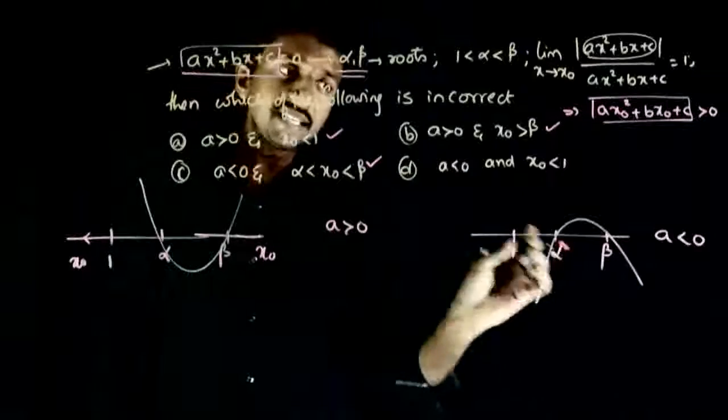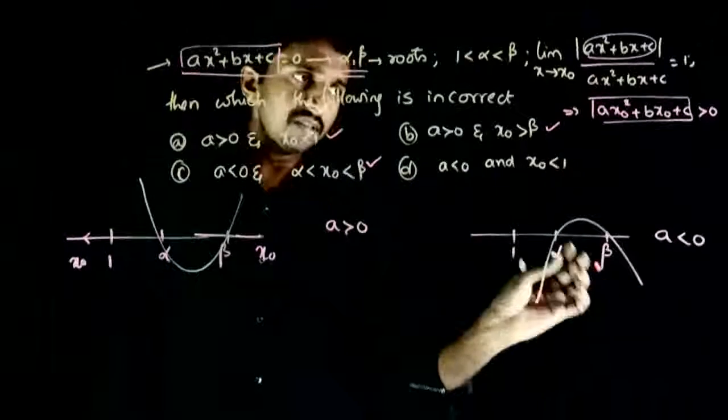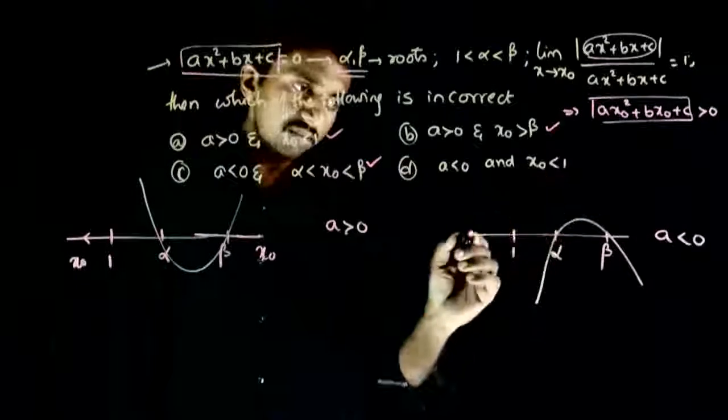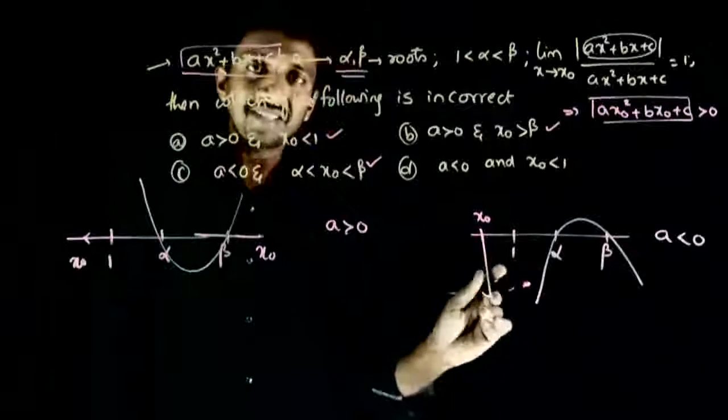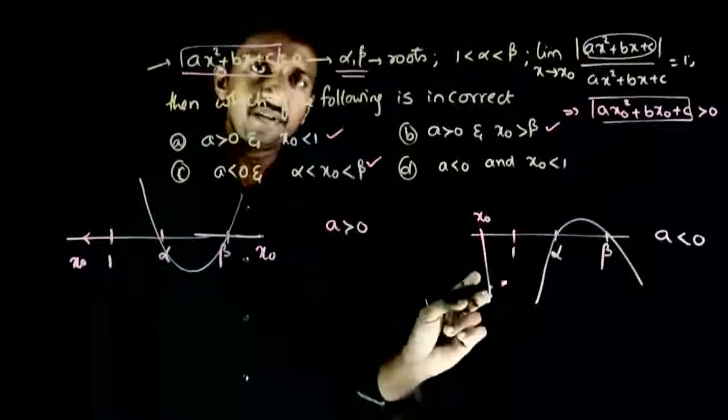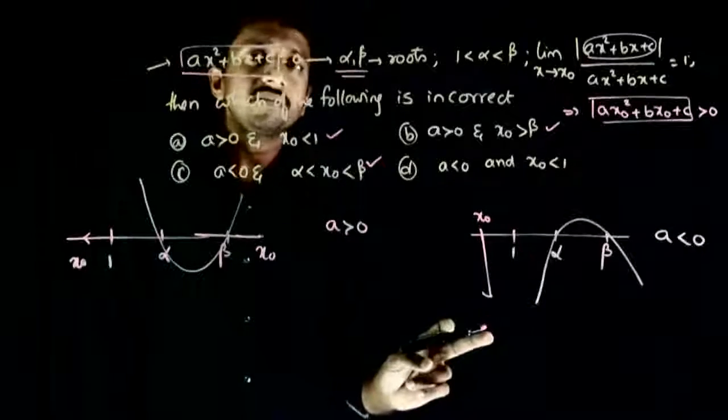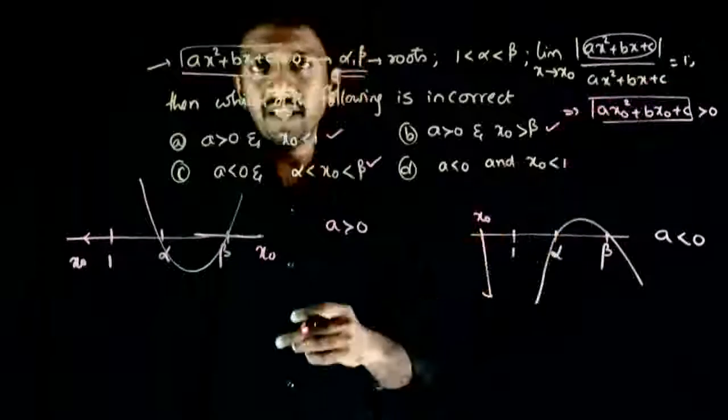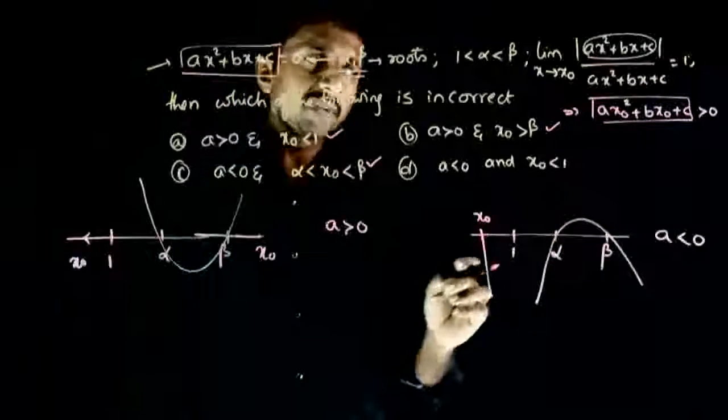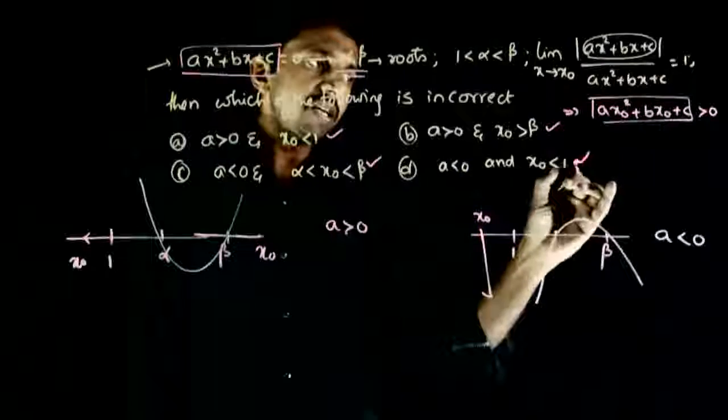Lastly, if a is less than zero and x0 is less than one, if x0 is somewhere here, the value of the function is negative. So mod of this by this will give minus one, not plus one. Hence this statement is incorrect.